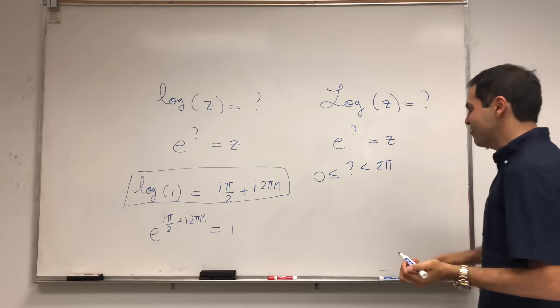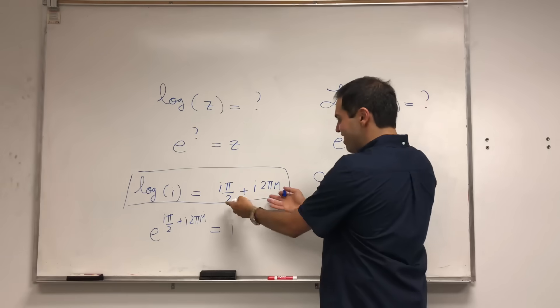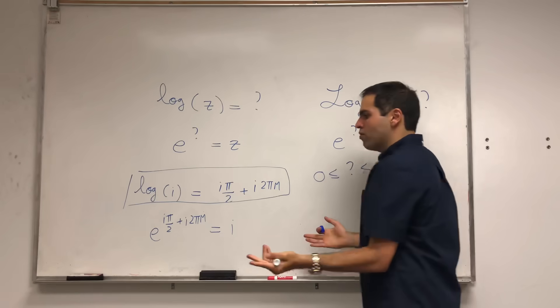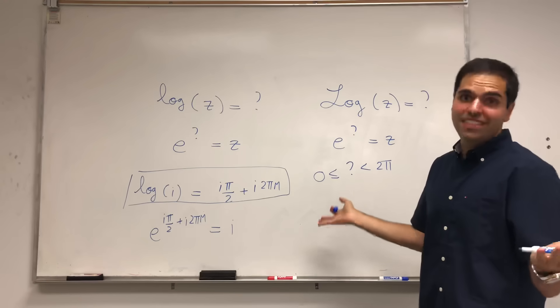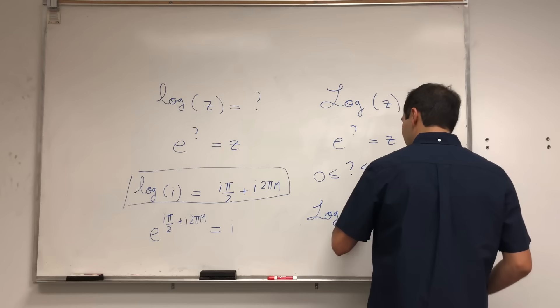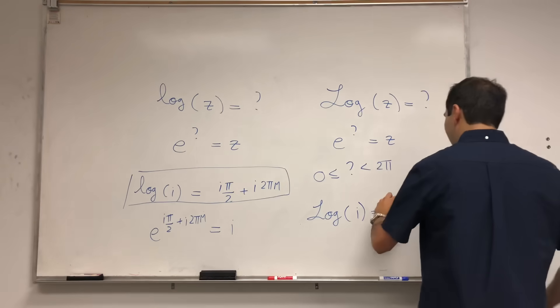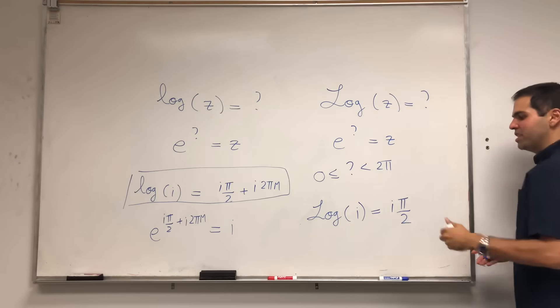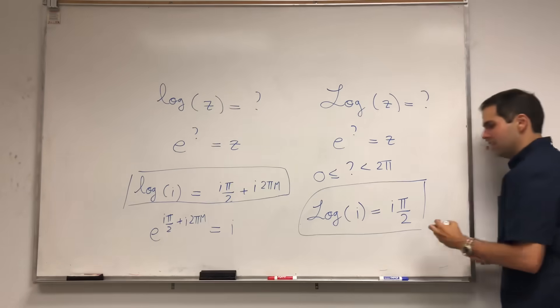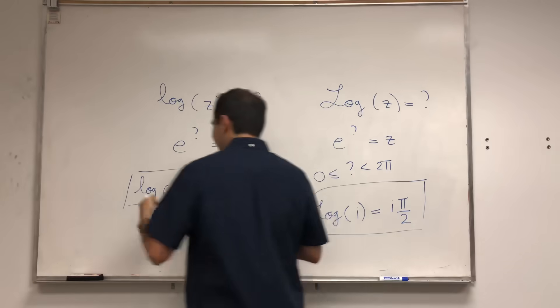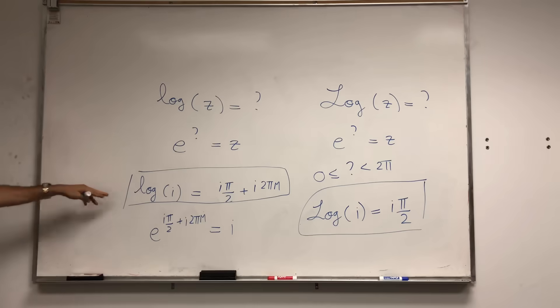And let me just write this in this case, but of course, strictly speaking, you have to replace it with the argument. Which means in this case, which one do we pick? Well, we pick n equals to 0, because then π/2 is between 0 and 2π. So, in this case, log of i, in this case, becomes iπ/2, because the angle, or if you want the argument, is between 0 and 2π. And so, there are two different possibilities. There's a general log, and there's a principal log, and the difference is just the lower case and upper case.